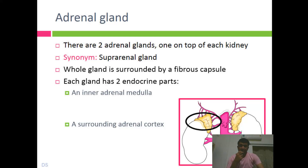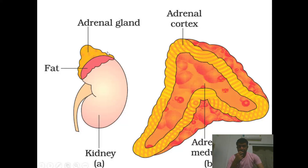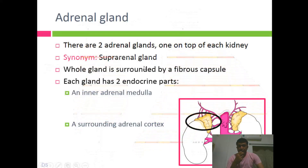This gland internally has two parts. The surrounding outer part is referred to as the cortex, and the inner part is referred to as the medulla. On the outer periphery you have the fibrous capsule, then the structure is divided into anatomical parts: the outer part is the cortex, and the inner part is the medulla.